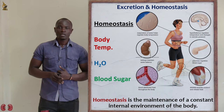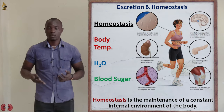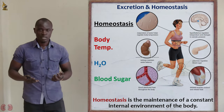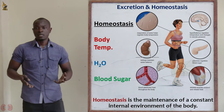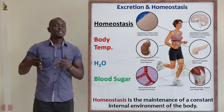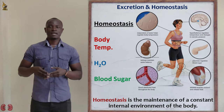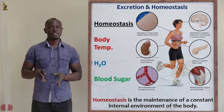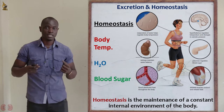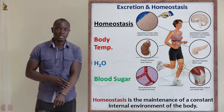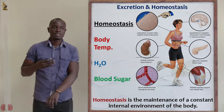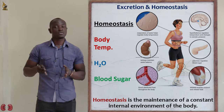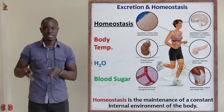Homeostasis is the maintenance of a constant internal environment. For example, when someone has been running, they sweat. An athlete sweats because the body wants to bring temperatures back to 37 degrees Celsius, the normal body temperature. The sweat deposited on the skin is cooled by air passing over the surface, producing a cooling effect that brings body temperature back to normal.